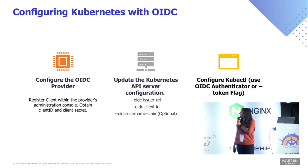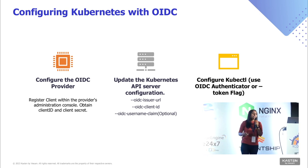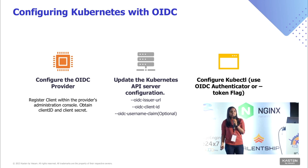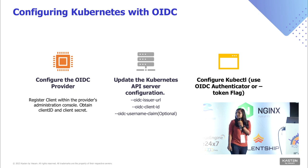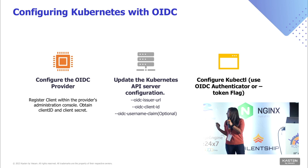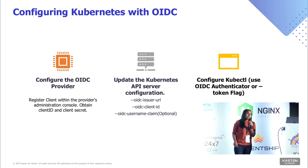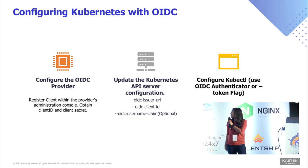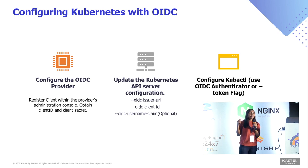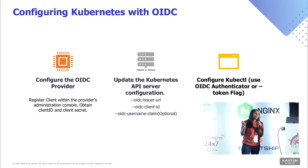Configuring Kubernetes with OIDC involves three main steps common across identity providers. First, configure your OIDC provider by registering your client and getting the client ID and secret. Second, update your Kubernetes API server configuration — flags available include OIDC issuer URL, client ID, and username claim. Third, configure your kubectl so tokens can be provided; you can use the token flag or the kube config authenticator, which sets your kubeconfig file so you get the token automatically.